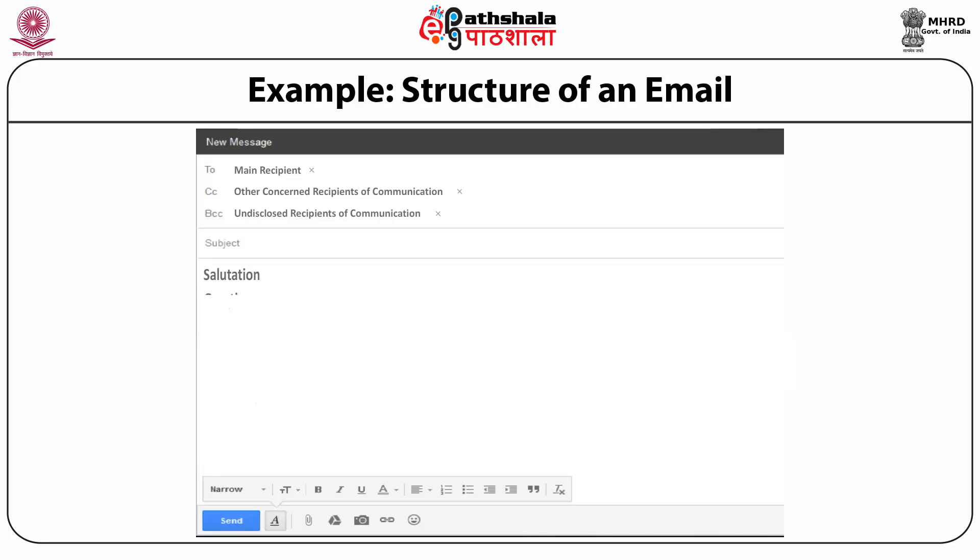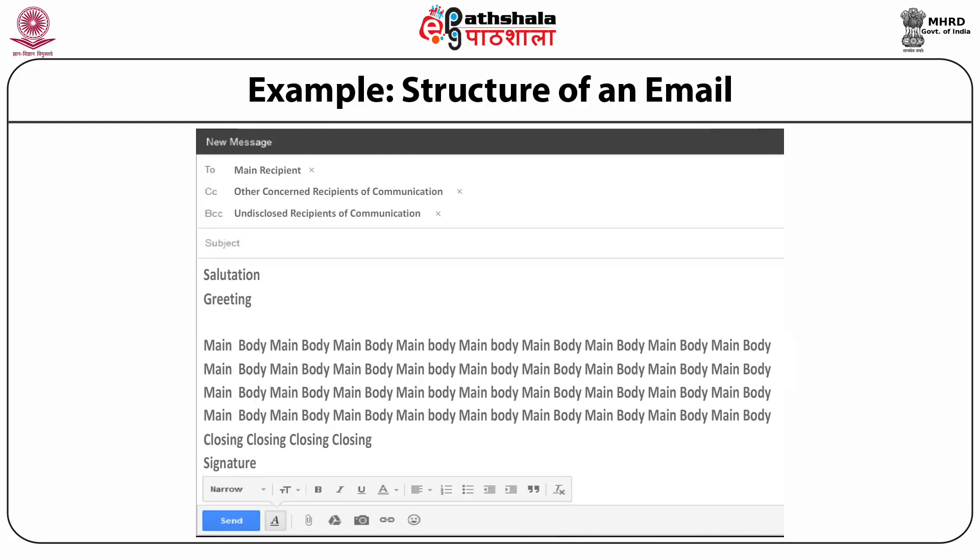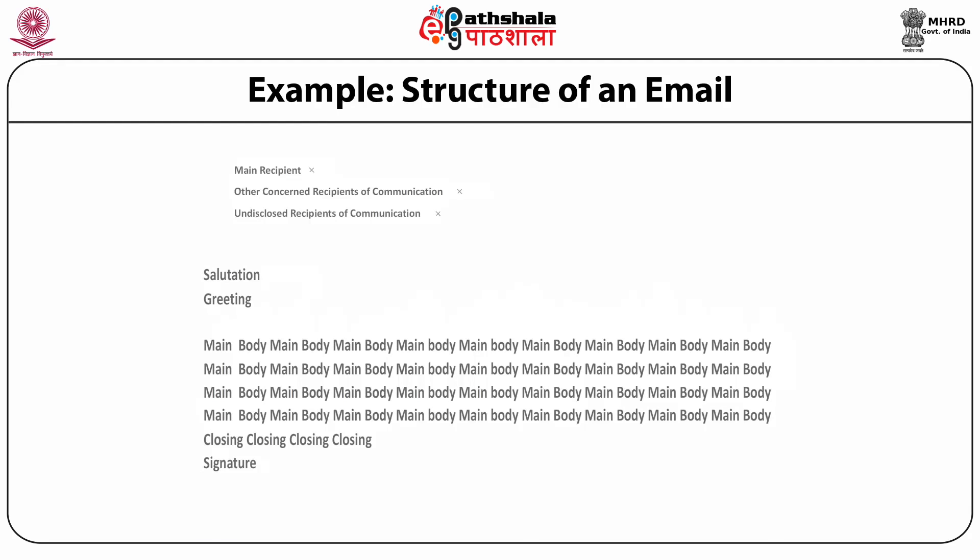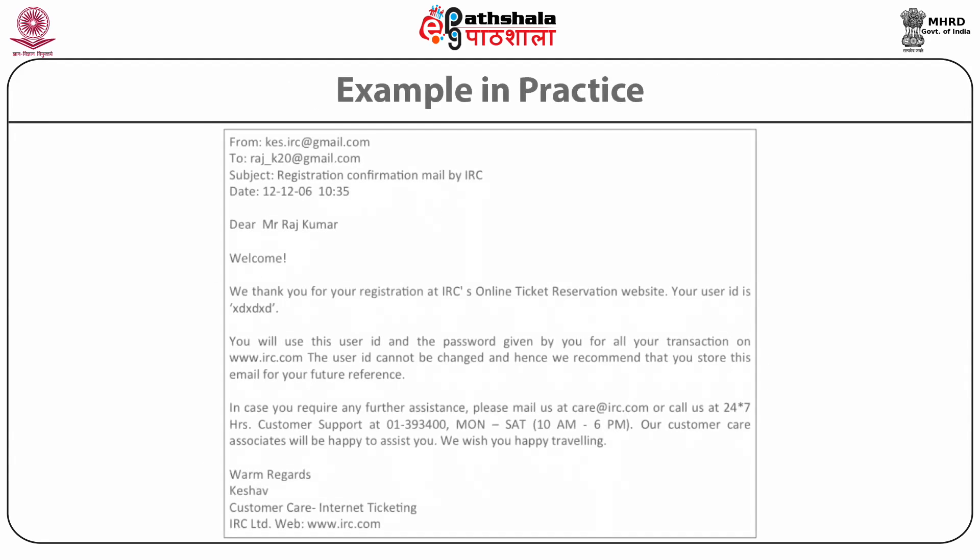Let's go through the example and try to identify the subject, salutation, closing, and signature in the mail. Looking at the format of the structure of an email, at the top 'To' is written where the main recipient email address will appear. Then 'CC' shows other concerned recipients, and 'BCC' signifies undisclosed recipients. Then there is a subject line. In the message, first comes salutation, then greeting, then the main body, followed by closing and signature. At the bottom, we can identify various action buttons and formatting buttons.